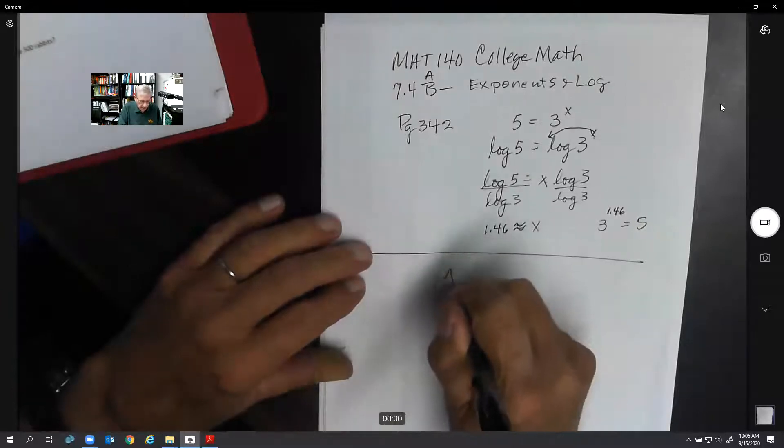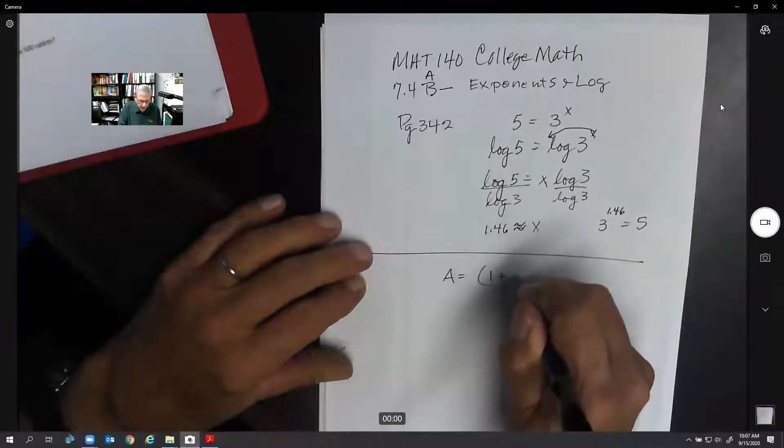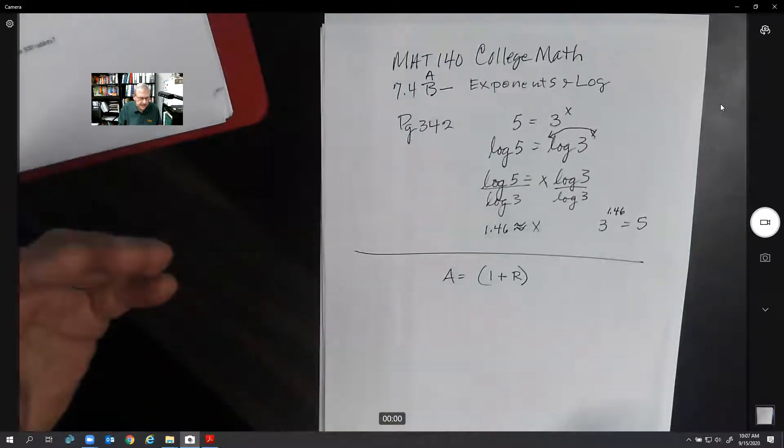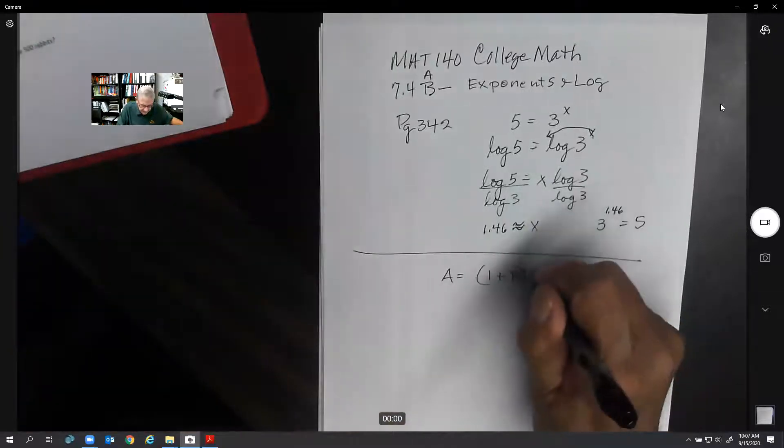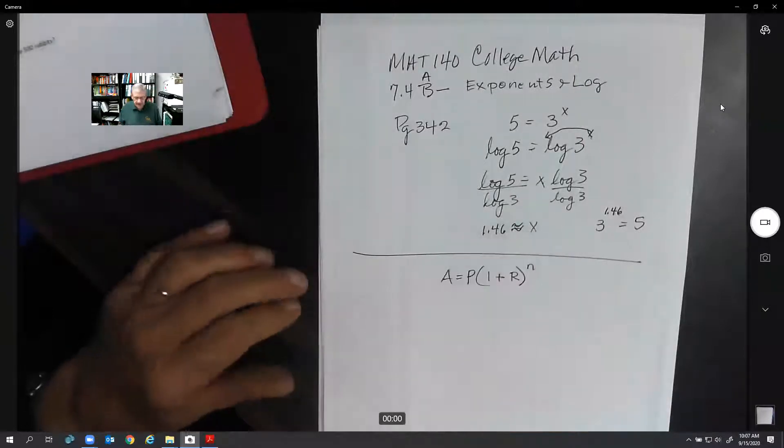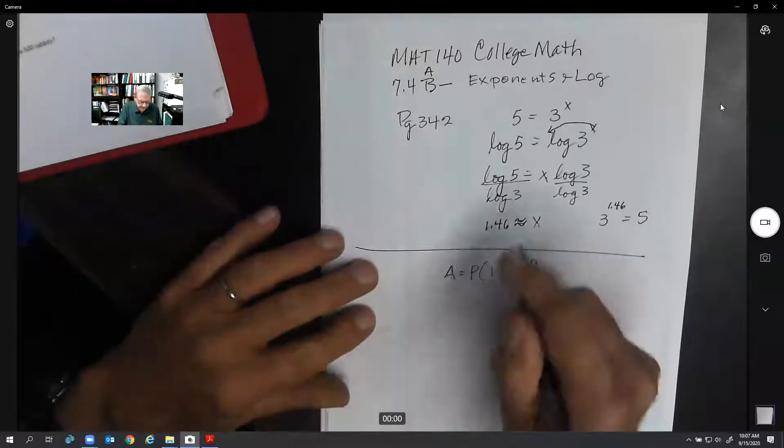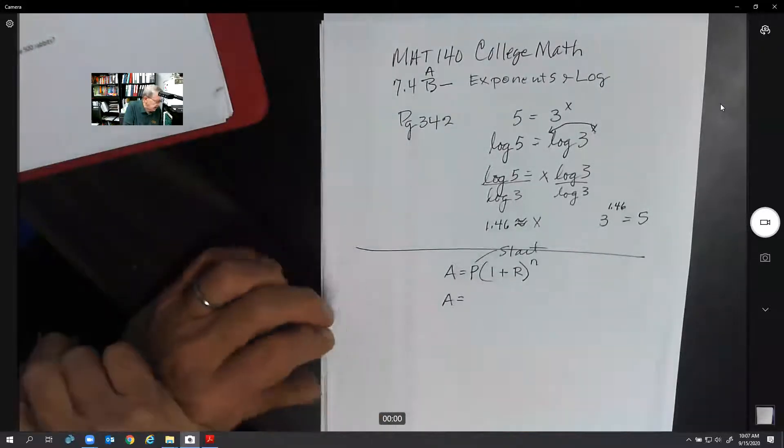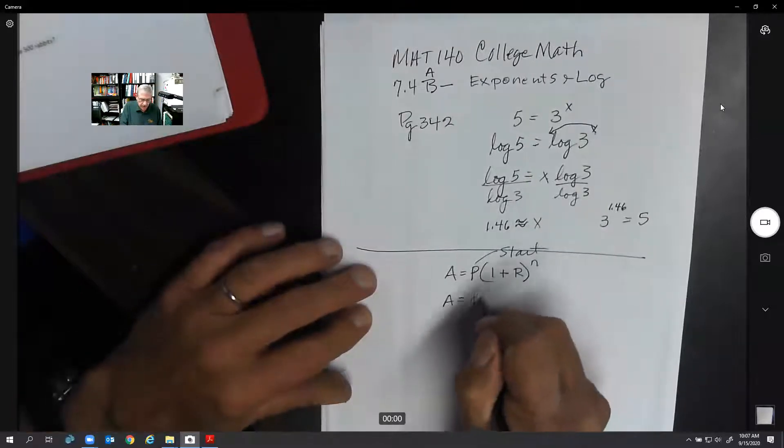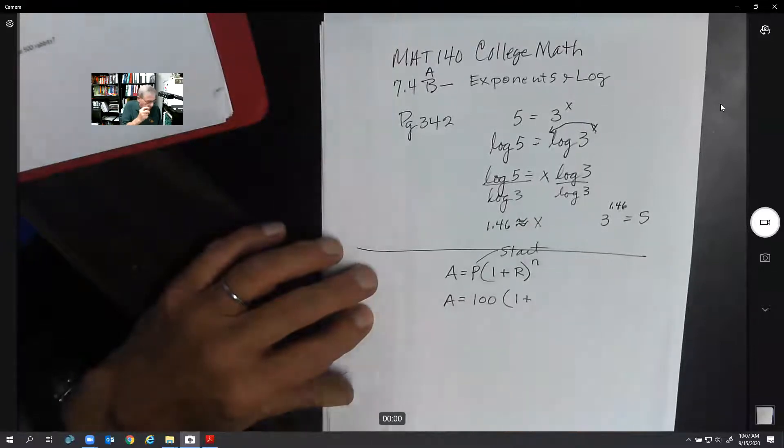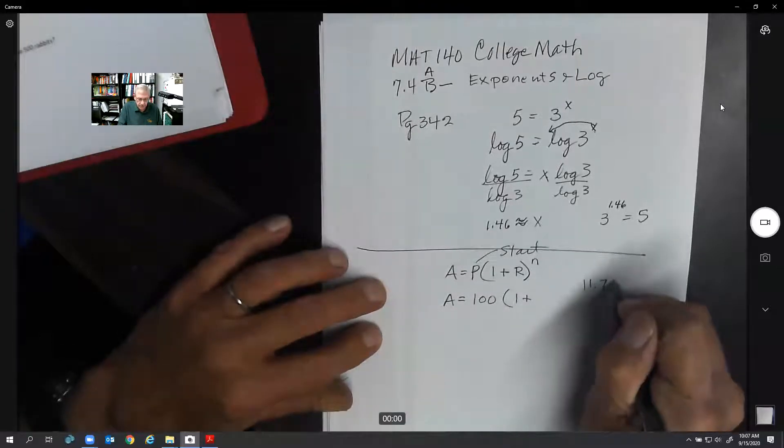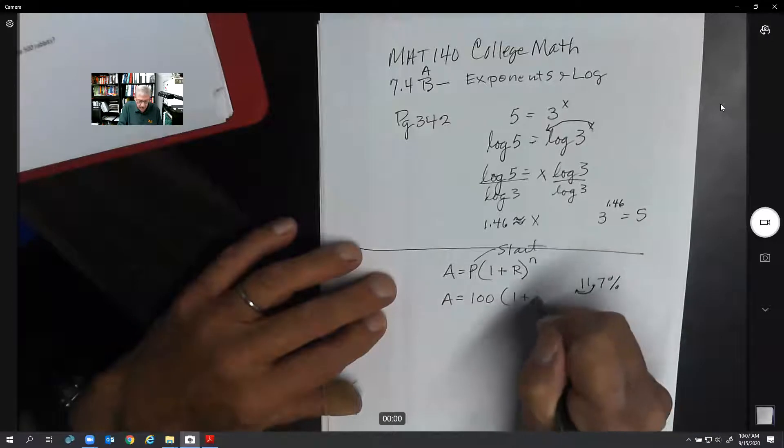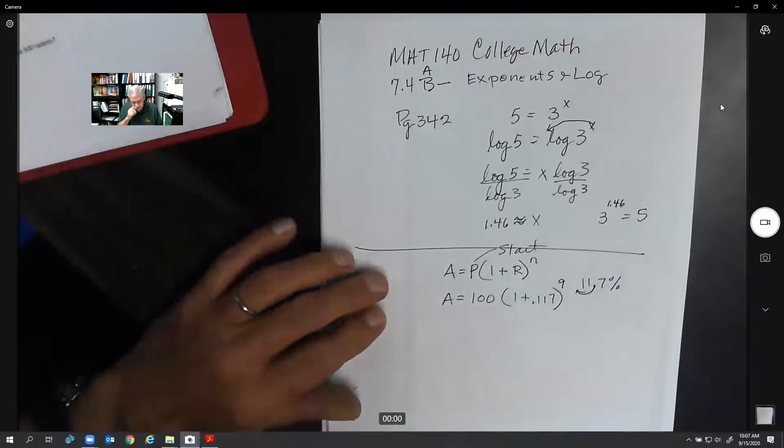We're going to use this formula: A equals 1 plus the growth rate, which we call R, times the number of years normally, but in this case it should be the number of days, and we want to multiply that by the principle or the starting amount. This is the amount you started with. So we started out with a population P for population, 100 rabbits, one plus the growth rate is 11.7% per day. We're going to move this over two places to make it a complete decimal, 0.117. And we're going to do this for nine days.